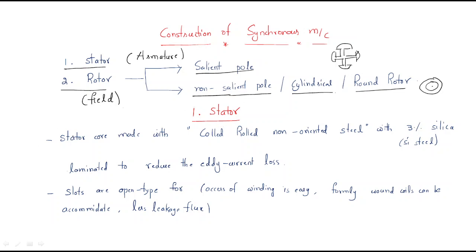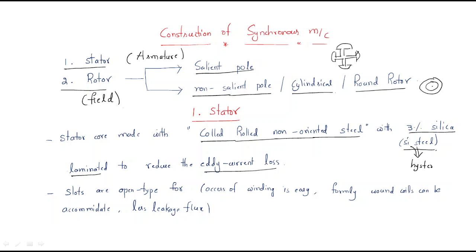First, we will discuss the stator. The stator core is made with cold rolled non-oriented steel, which is very useful to reduce hysteresis losses as well as eddy current losses. Three percent silica is added, which is why it is called silicon steel. Silica reduces hysteresis losses, and lamination is done to reduce eddy current losses.